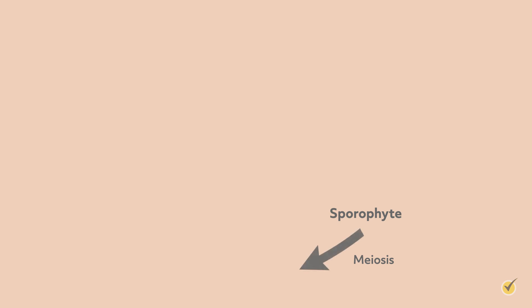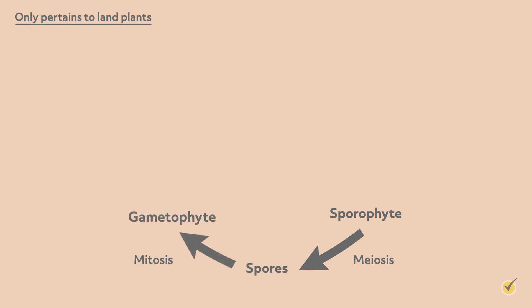Sporophytes are diploid cells that will undergo meiosis to produce haploid spores. These spores will then undergo mitosis to form the haploid gametophyte generation. This may seem unusual since animal cells have diploid cells that undergo mitosis to form more diploid cells, but remember that the point of mitosis is to produce genetically identical daughter cells, and in both cases that's exactly what mitosis does.